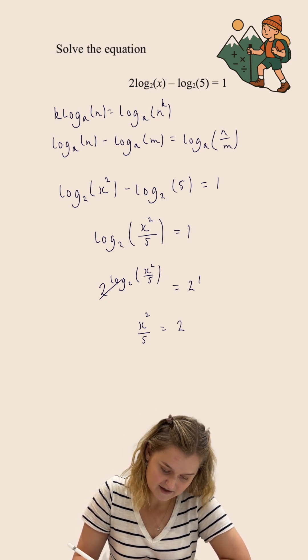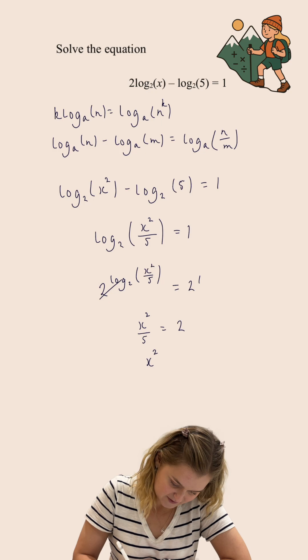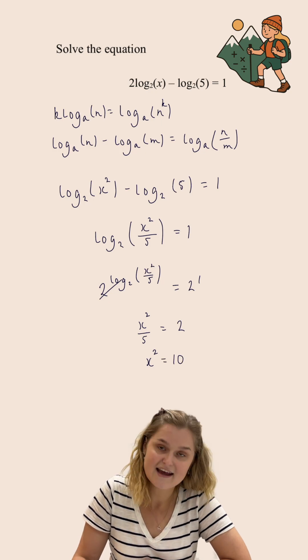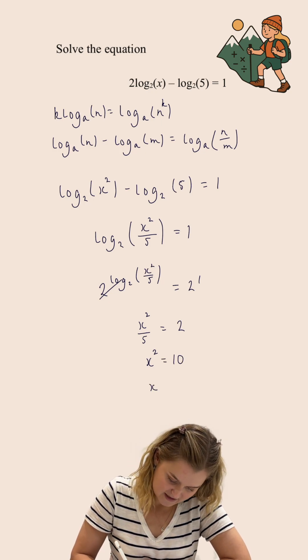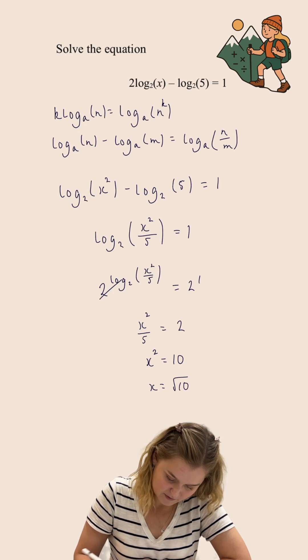So I'm going to multiply both sides by 5 to give me x² equals 10. And then I'm going to square root to give me x equals the square root of 10.